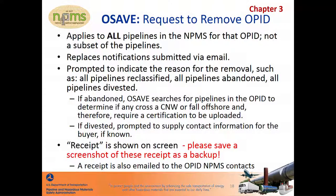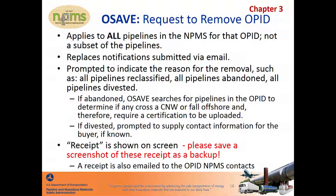If you indicate that the removal is related to pipelines being abandoned, OSAVE will evaluate the pipelines in the NPMS for that OPID to determine if any segments cross a commercially navigable waterway or fall offshore. If so, OSAVE will prompt you to upload the required certificate of abandonment. If you indicate that the removal is related to pipelines being divested to another operator or OPID, OSAVE will prompt you to supply information about the new operator — such as the new OPID, the company name, a contact person's name, email, and phone number. NPMS staff will follow up with the new operator to determine whether the pipelines are still operated as FEMSA jurisdictional pipelines and make sure the pipelines are resubmitted under the new operator.